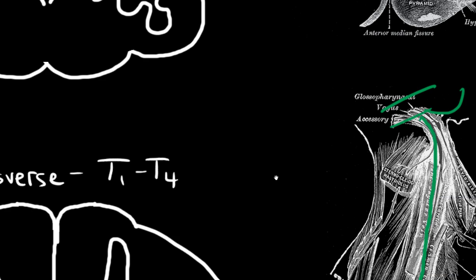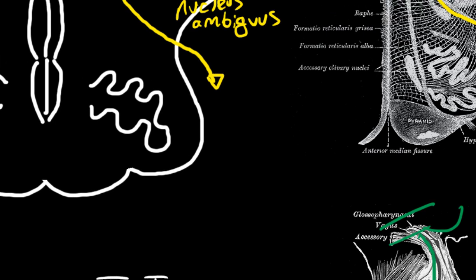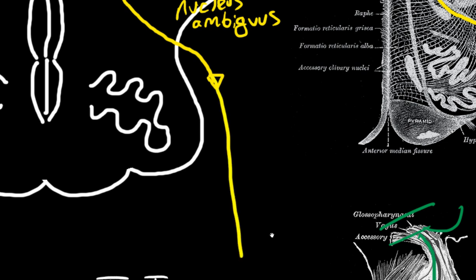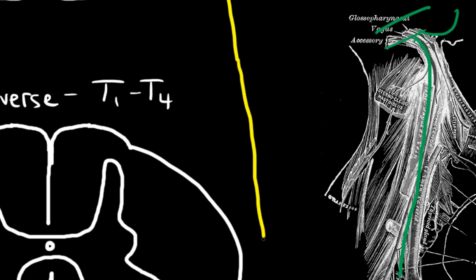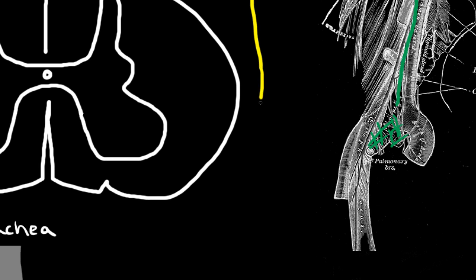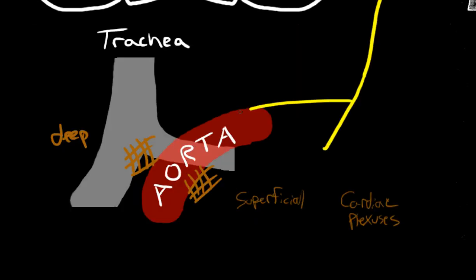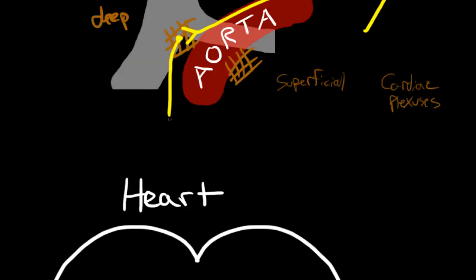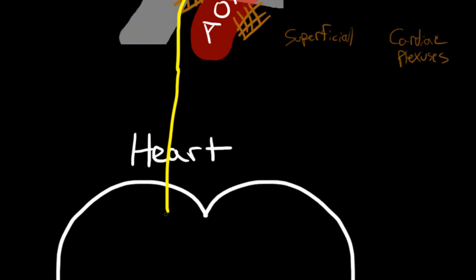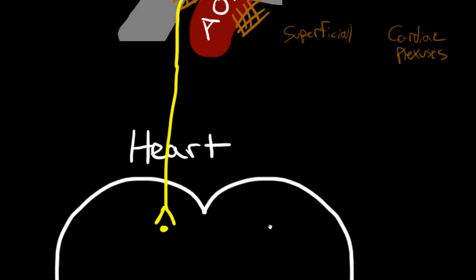And as cranial nerve 10 descends in the neck, it's going to send off branches into these cardiac plexuses. So right now it's preganglionic as it's descending and now it's giving off branches into the cardiac plexuses. It'll synapse here and then send down small branches to the heart, which is very close nearby. And they'll finally synapse there.